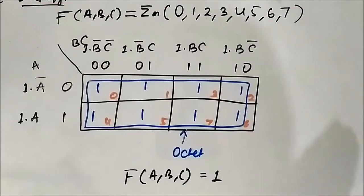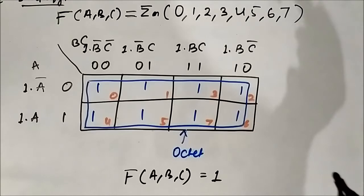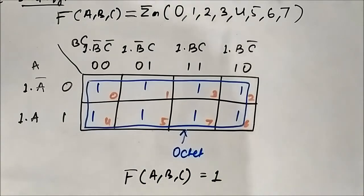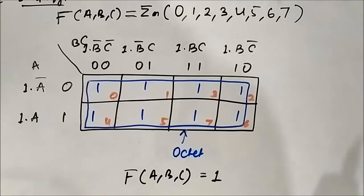Here, all the cells of the K-map are involved in the group formation. One big octet is formed, and we have 1 as common — that is the simplified Boolean expression. It is a very interesting question because all the cells were involved in group formation and we got this result.